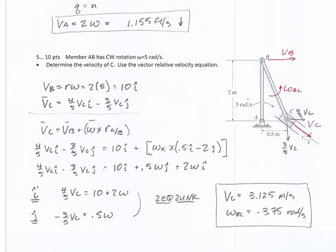Problem five uses the relative velocity equation. First recognize that the velocity of B goes in its direction and the velocity of C goes in that direction. The components and directions of those velocities were worth about two points apiece. VC has a negative J component and a positive I component. The equation is: velocity of C equals velocity of B plus omega_BC cross the position vector. I placed omega of BC in the positive K direction, crossing it with the position vector of 0.5 I minus 2 J, giving two equations, two unknowns, and solving for velocity of C.